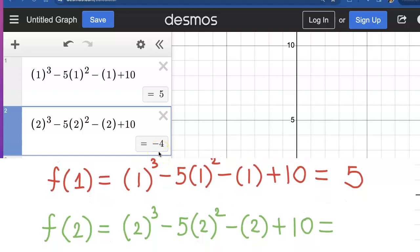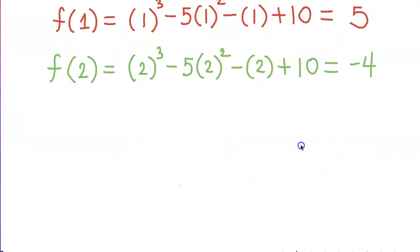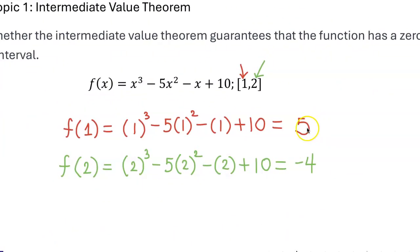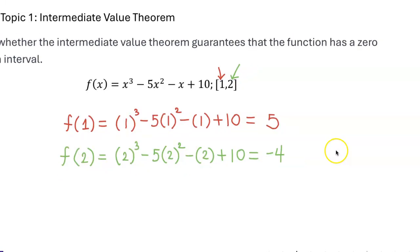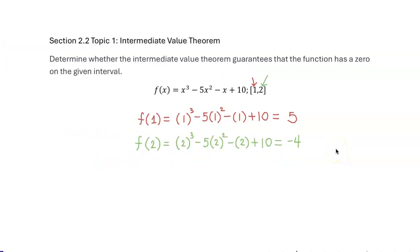So what will happen is, if you have a graph that is up at 5 and the next point you need to go down to negative 4, guess what number you have to go through? If you're going from a positive number down to the negative number, the Intermediate Value Theorem states that you must go through zero here.